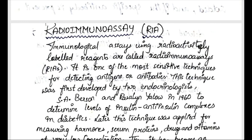This is all about labeled antibodies — immunofluorescence and radioimmunoassays. In the next part we are going to discuss about enzyme-linked immunosorbent assay, simply called ELISA. Thank you.